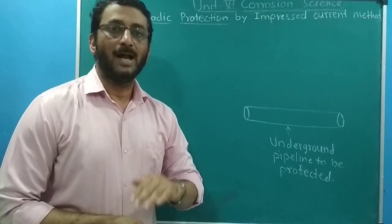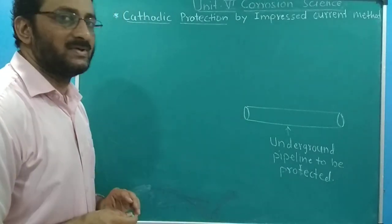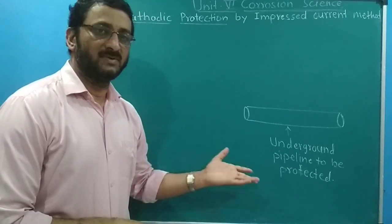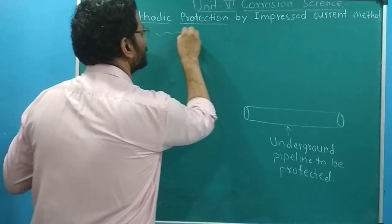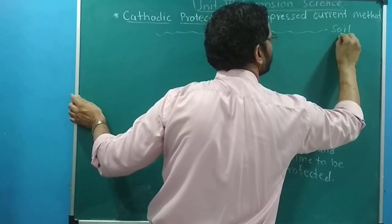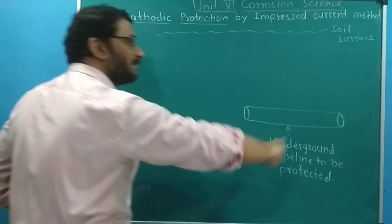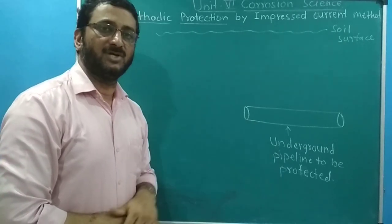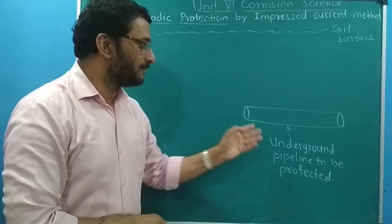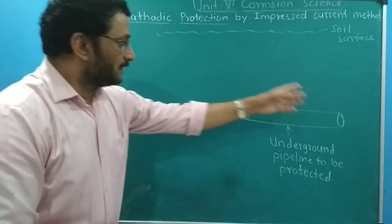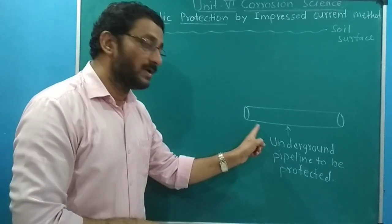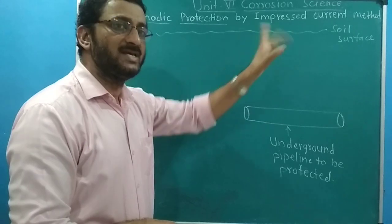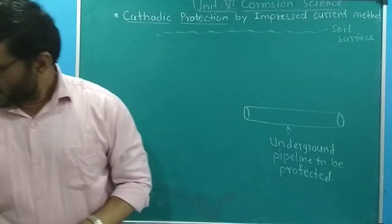Here we use impressed current so as to convert the corroding anodic metal from anode to cathode. Let us take one simple case: suppose this is an underground pipeline carrying some liquid, water, or gas. This is underground soil — this is the soil surface, and below it this pipeline is there carrying some liquid or gas. Without any type of protective measure, as per the electrode potential, it will show an oxidation reaction — electrons will be lost, taken by any cathode material nearby. So this pipeline works as an anode and undergoes deterioration. This anode can be made cathode by using impressed current.